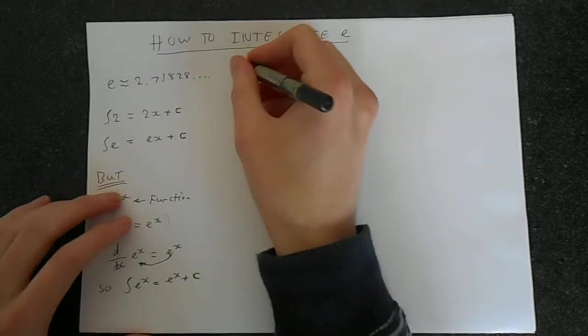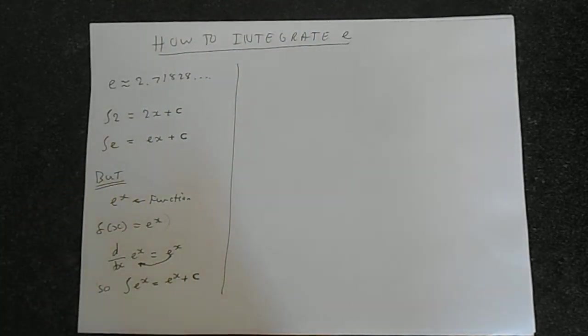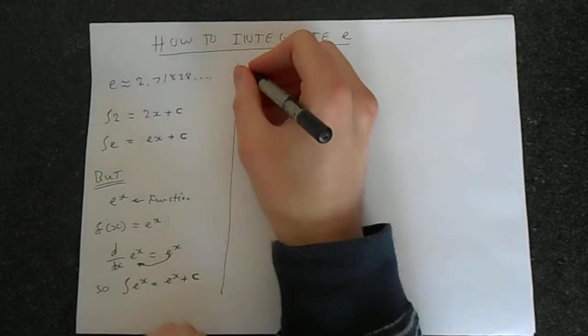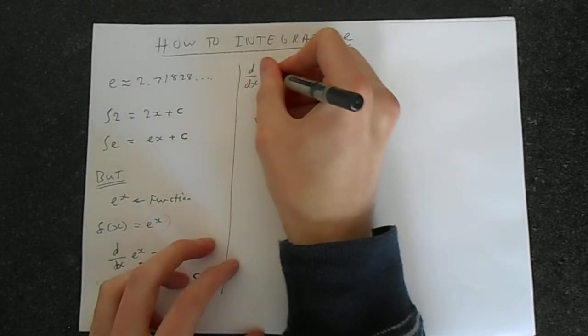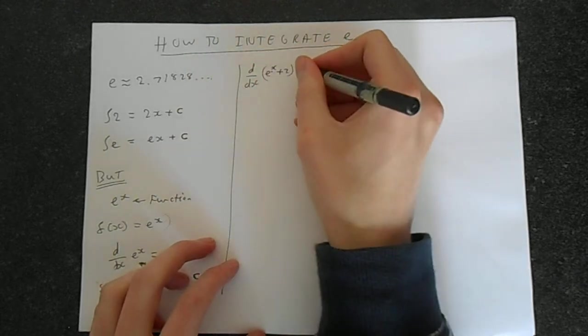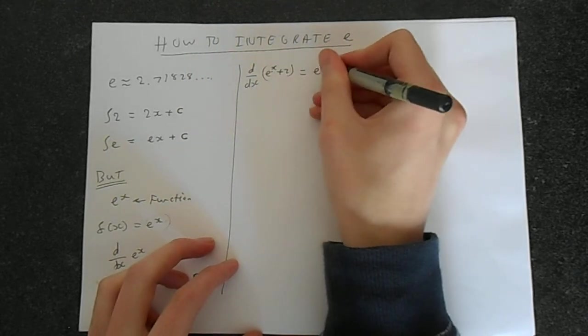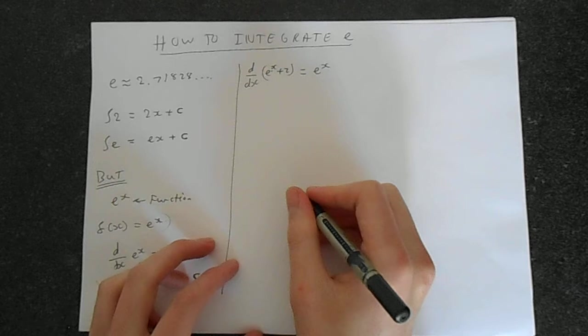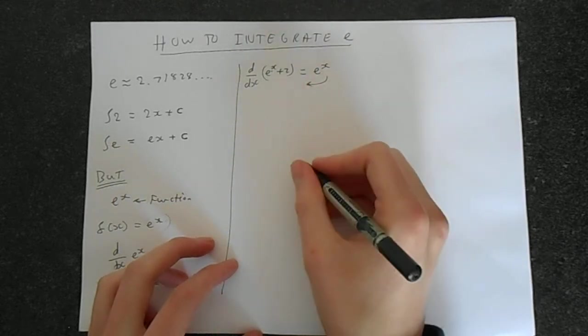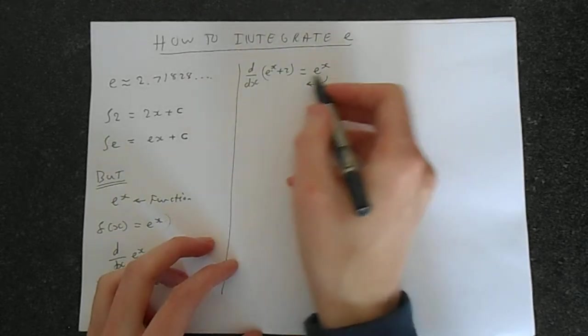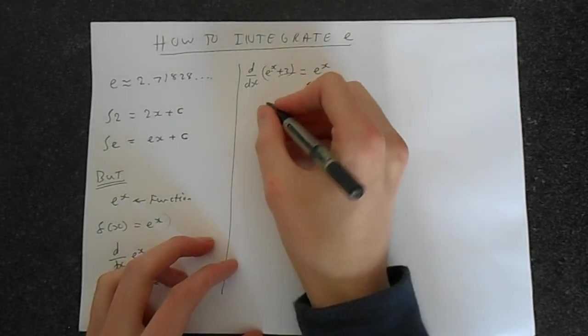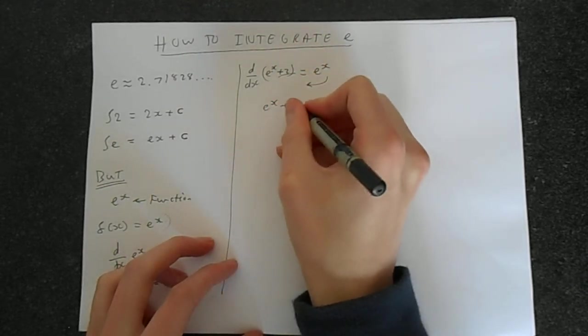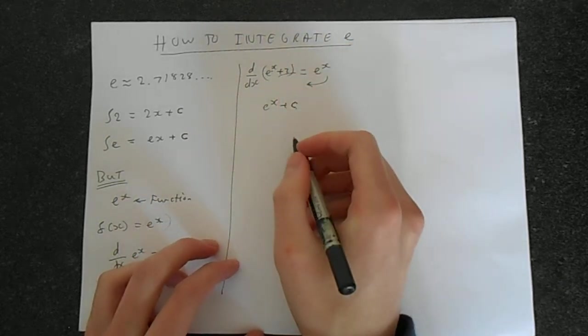Just to show you briefly, why do we say plus c? Well, imagine we had the derivative d/dx of e^x + 2. That would be e^x. If we want to go backwards and take the integral, we would just get e^x and miss out that 2. So that's why we say e^x + c is the integral. c makes the place for that 2.